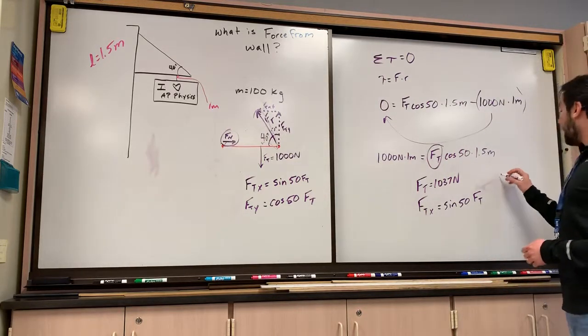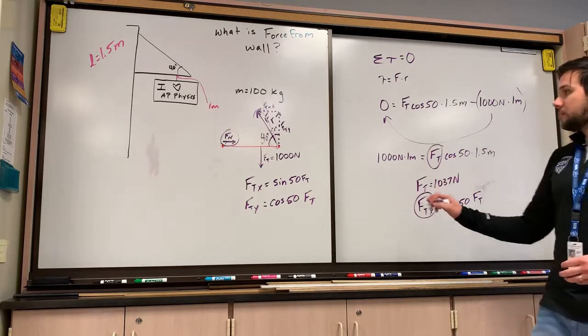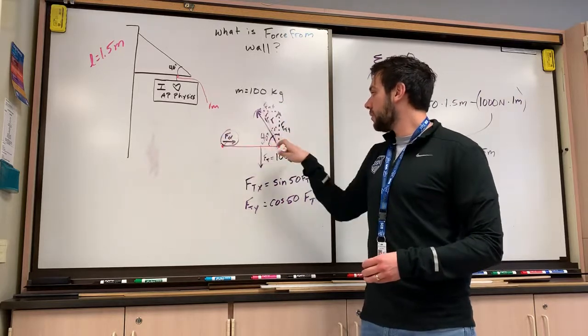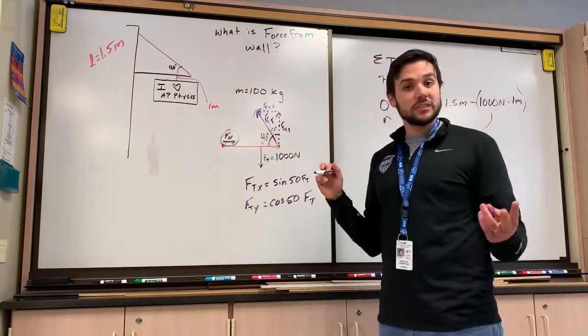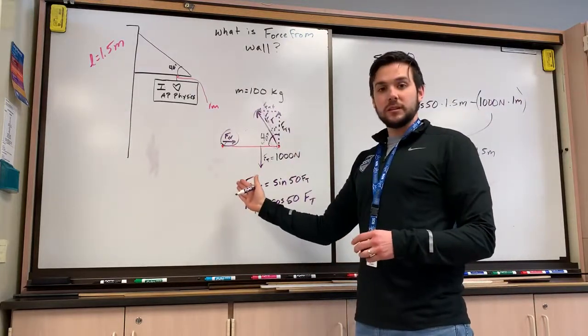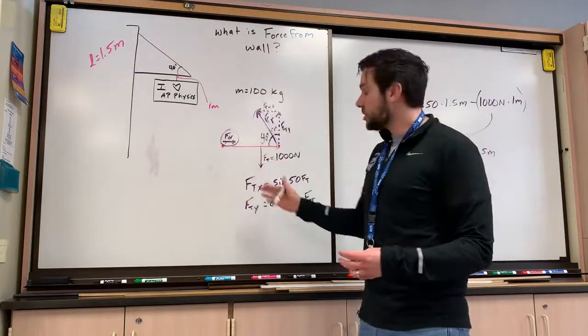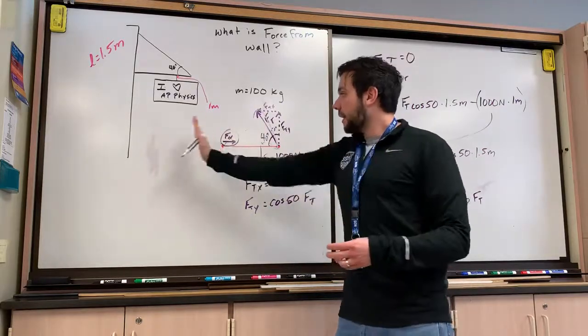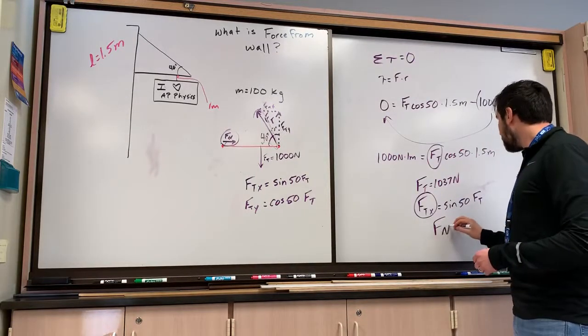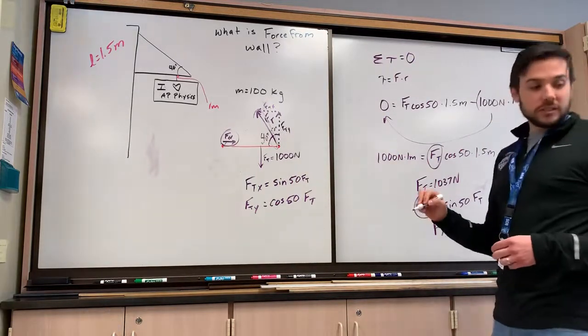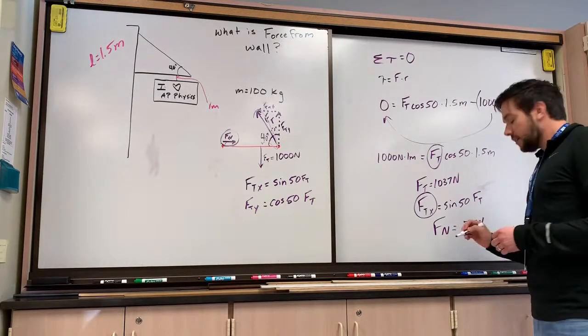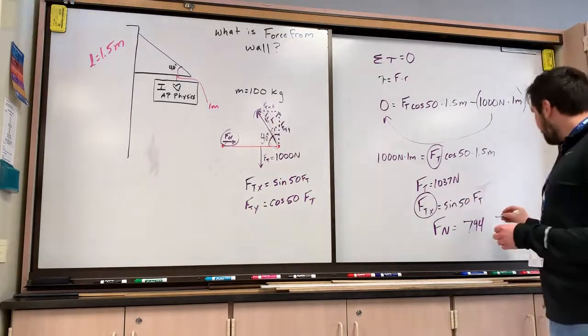So that is not only my x component, but it is also my normal force, because I know that those two components have to, in fact, cancel each other out. Because this object is not rotating, does not have a rotational acceleration, and it does not have a translational acceleration back and forth. So I can then determine that my normal force is 794.5 newtons.